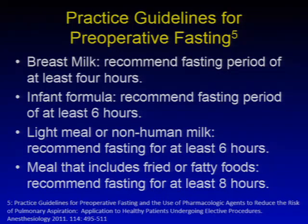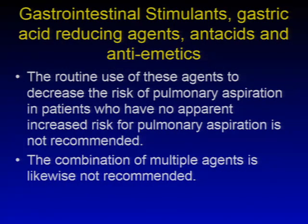There are controversial areas with no true ASA recommendation, such as chewing gum or chewing tobacco. With regards to gastrointestinal stimulants, gastric acid-reducing agents, antacids, and antiemetics, routine use of these agents to decrease the risk of pulmonary aspiration in patients with no apparent increased risk is not recommended. The combination of multiple agents is likewise not recommended.